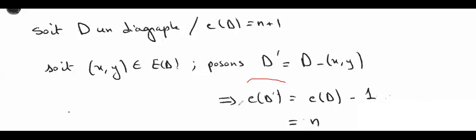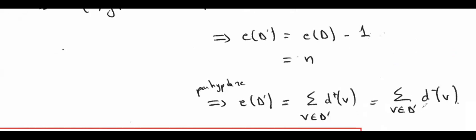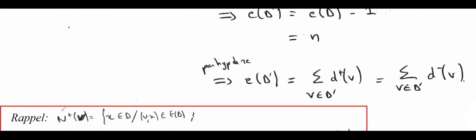So all the arcs are the same in D'. The difference is only one arc from x to y, this arc. The hypothesis of recurrence is that E(D') equals sum of degrees sortant in D' minus sum of degrees rentrant in D'. Recall that n plus de v is sortant and n moins de v is rentrant, where v x means v to x is an arc.